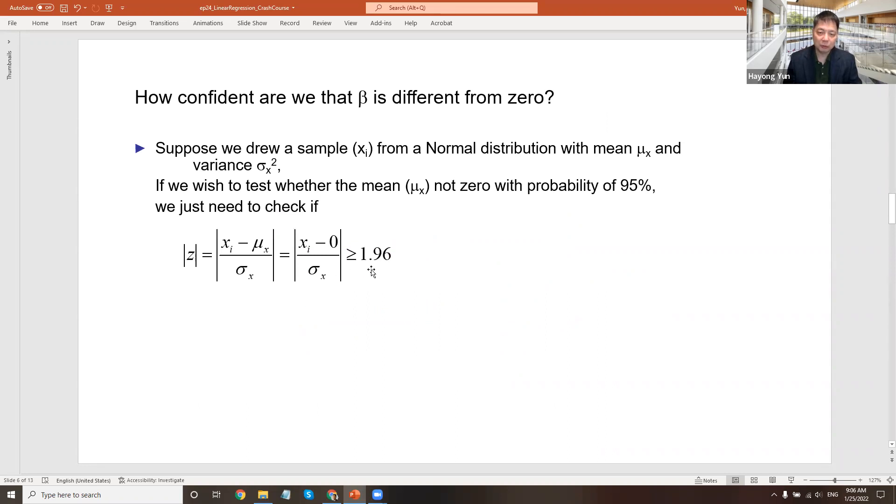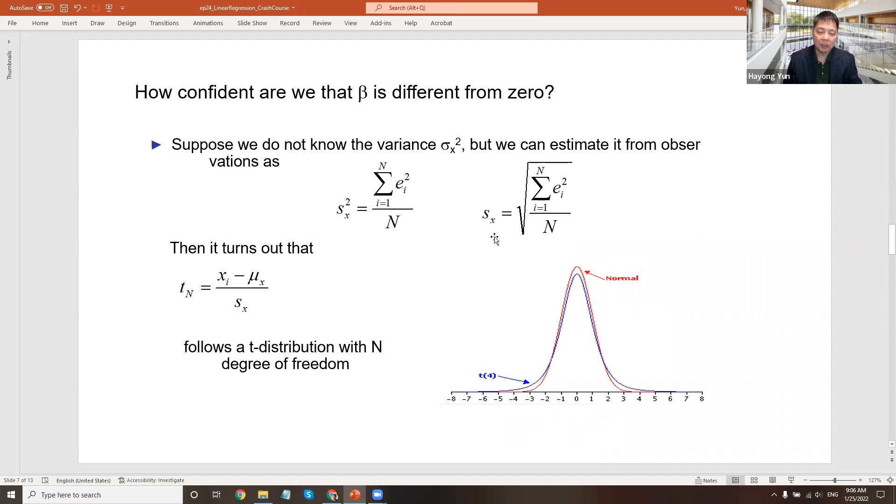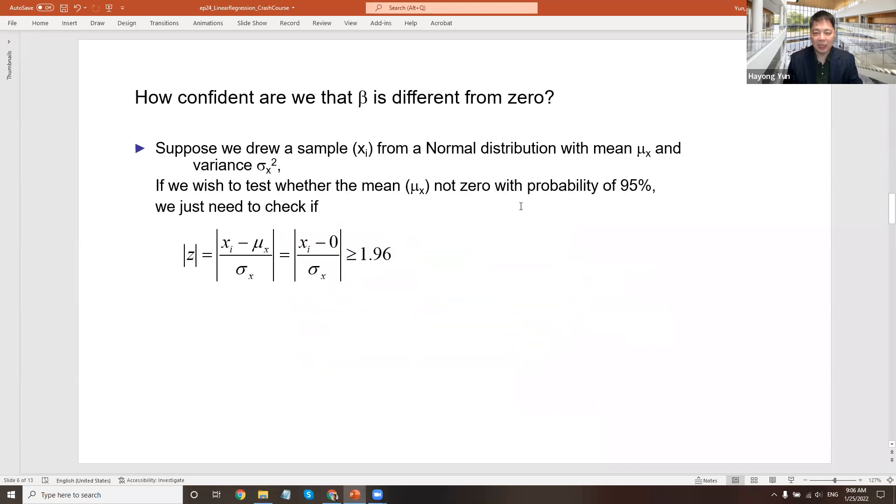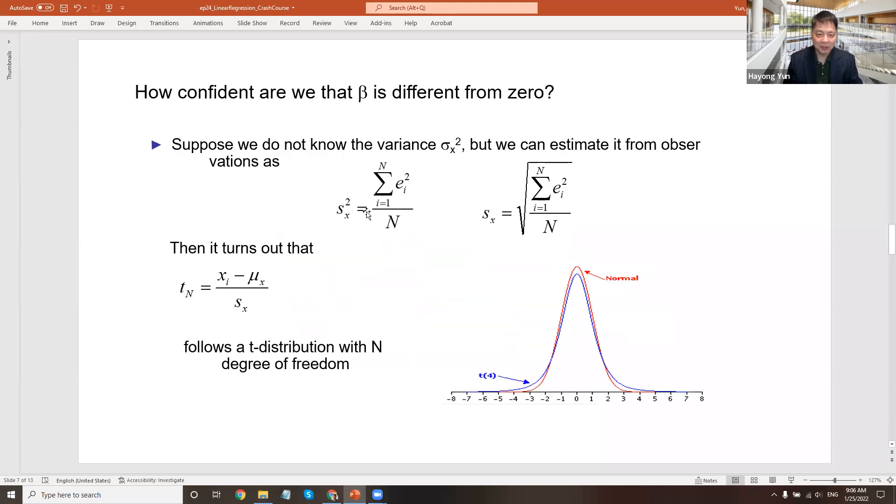So why is it not 2? Why 1.96? Because we actually don't know what the true underlying distribution of the revenue and such would be. So we kind of guess it out of the data points. We use these data points and kind of guess what the real standard deviation is of our distribution. So once you do a guess, rather than using a true standard deviation, then it's similar but slightly different bell-shaped curve called t-distribution.